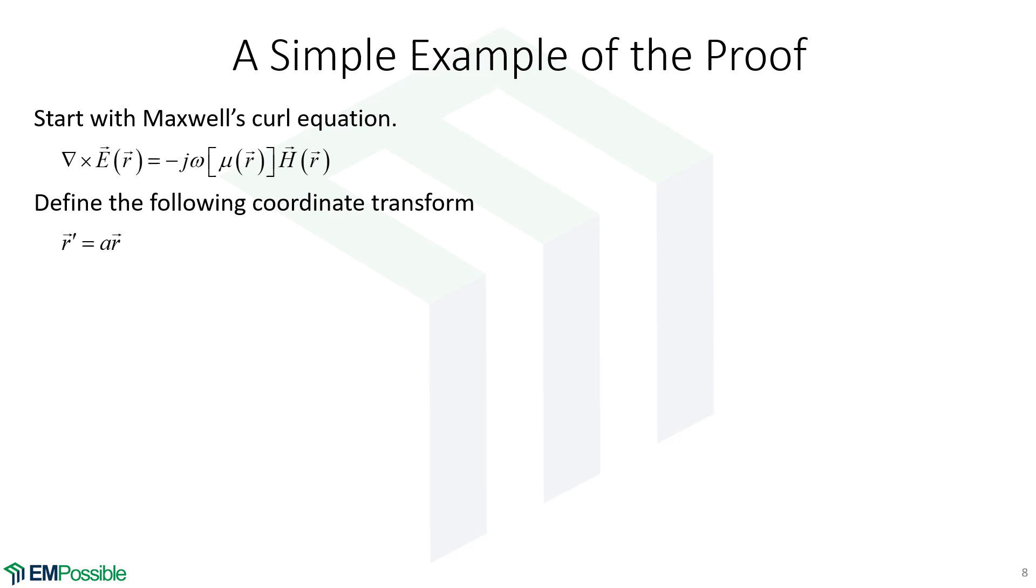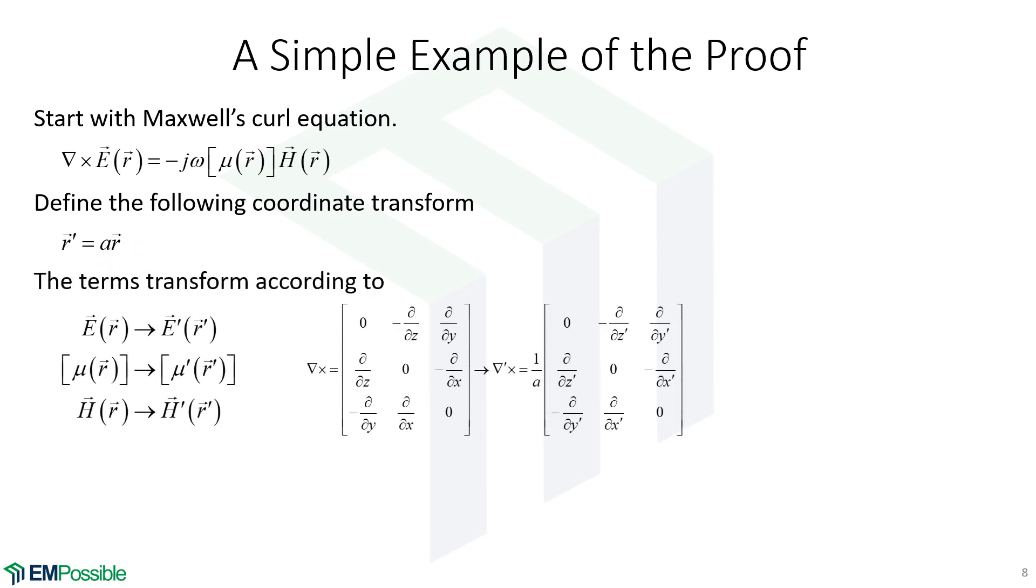All we're doing is scaling space by this factor A. So our transform coordinate system is simply the original coordinate system times that factor A. When that's the case, our electric field, our permeability tensor, and our magnetic field in the transformed space look the same way.